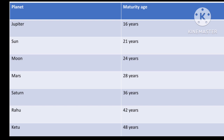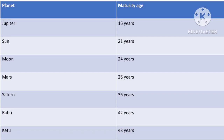Look at the chart on the screen — it gives the maturity age corresponding to every planet. Jupiter's maturity age is 16 years, Sun is 21 years, Moon (Chandra) is 24 years, Mars (Mangal) is 28 years, Saturn (Shani) is 36 years, Rahu is 42 years, and Ketu is 48 years.